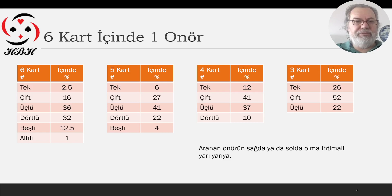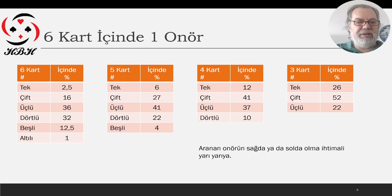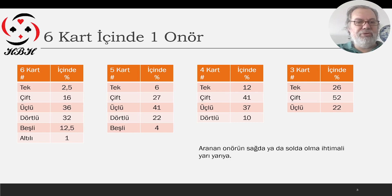Önce, bir onörümüz eksik. Altı kart içindeki duruma bakalım. Altı kart içinde tek parça yakalama ihtimalimiz sadece yüzde iki buçuk. Yani dışarıda altı kart var, az ya da ruva ya da her ne aradığımız onör, eksik olan bir onörümüz var. Bunu bulma olasılığımız sadece yüzde iki buçuk. İki parça olma ihtimali daha yüksek: on altı. Üçlü otuz altı ve dörtlü otuz iki.